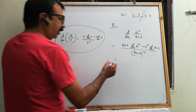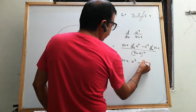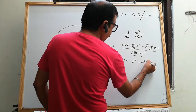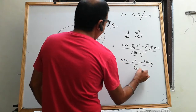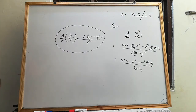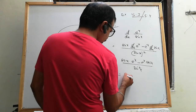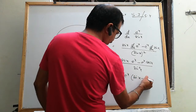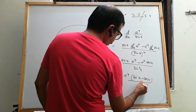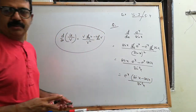तो यह कितना जाएगा: sin x into e to the power of x, minus e to the power of x into cos x, upon sin square x — ऐसा कुछ आएगा। And if it looks better, take e to the power of x common: e to the power of x into (sin x minus cos x) upon sin square x. तो यह first question था।